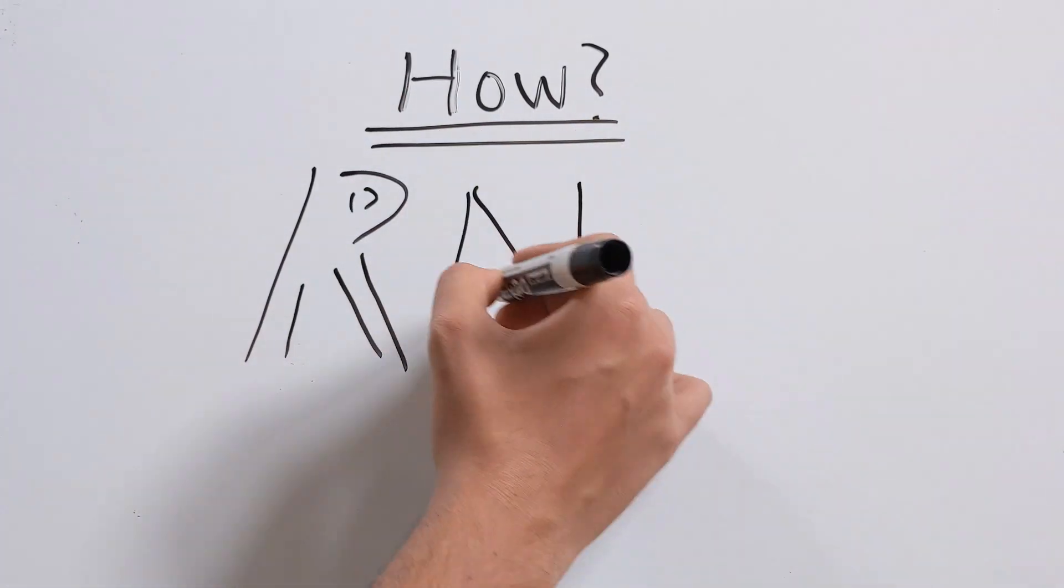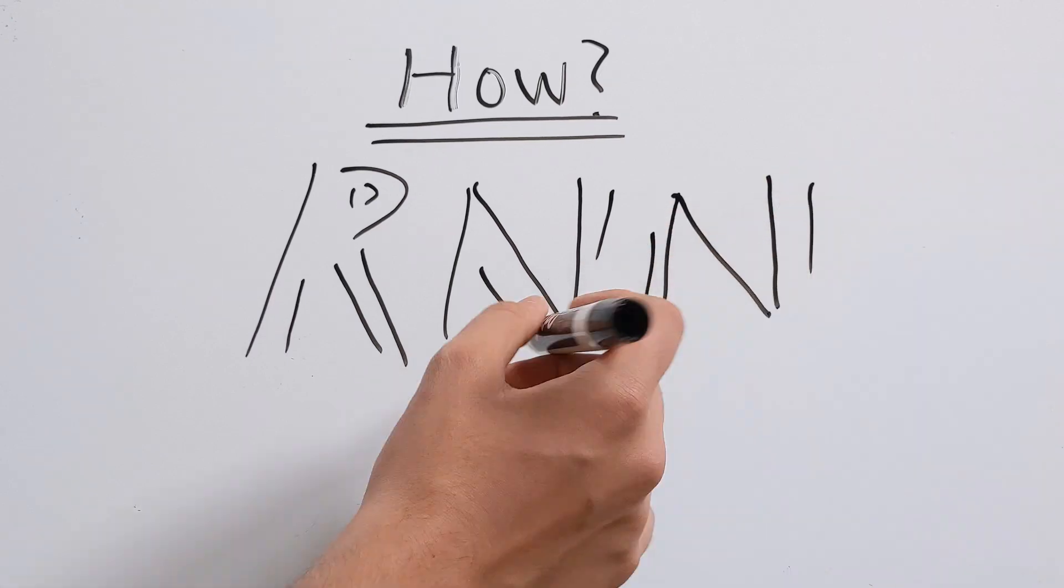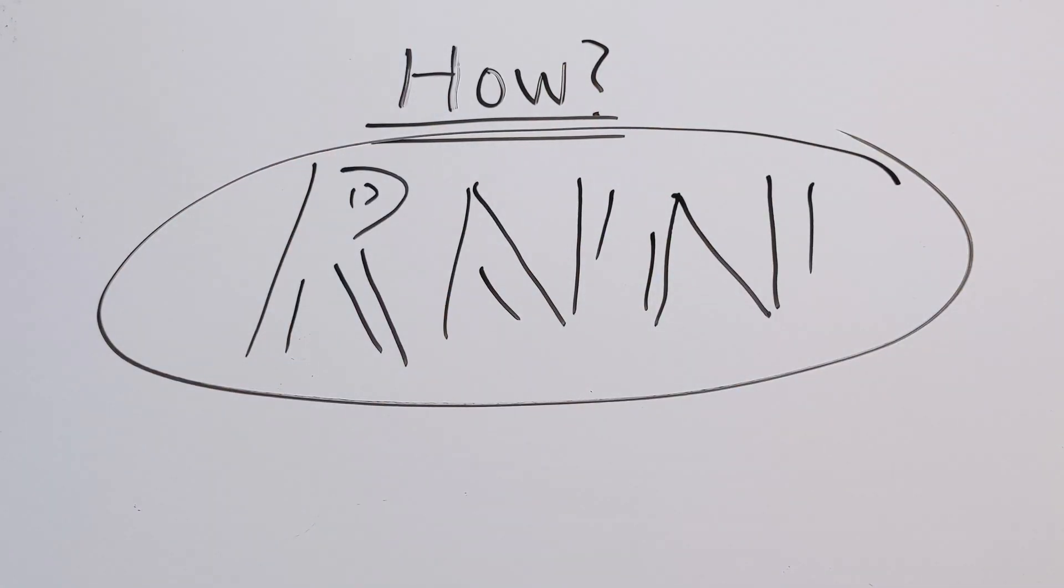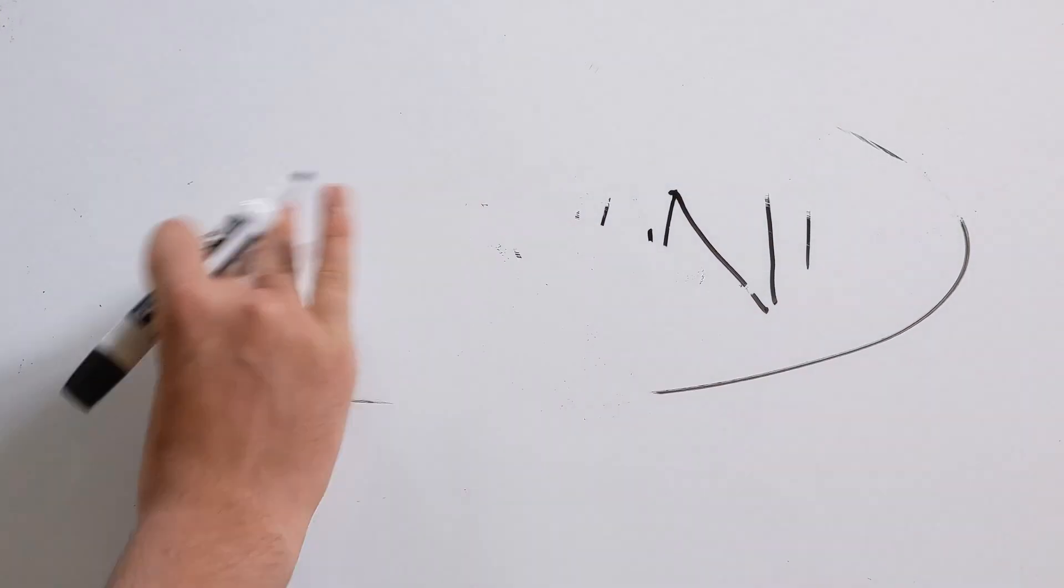So we use something called an RNN. And an RNN is a recurrent neural network. Keyword, neural network.